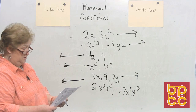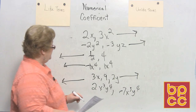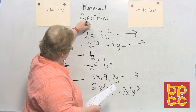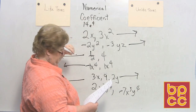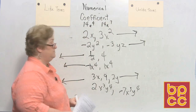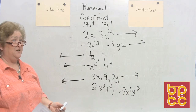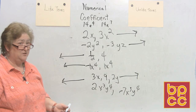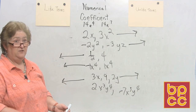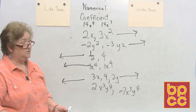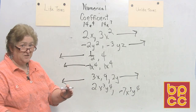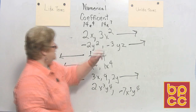How about 14a to the fourth and 14a to the seventh? Some people might pick like terms because they're both 14a's, but it doesn't have anything to do with the 14. It has to do with the a to the fourth versus a to the seventh. Those are unlike terms — can't work with it unless the variable and the exponent are the same.